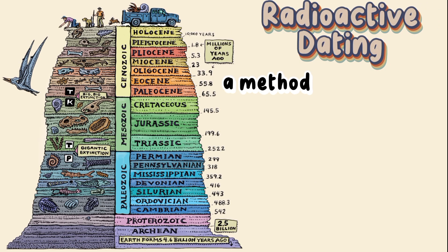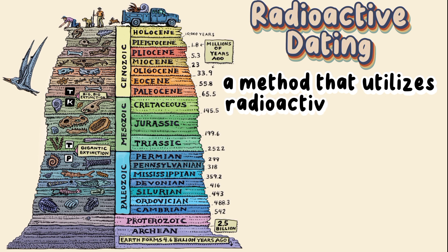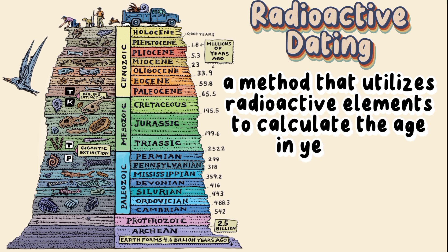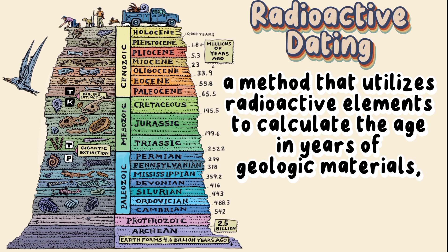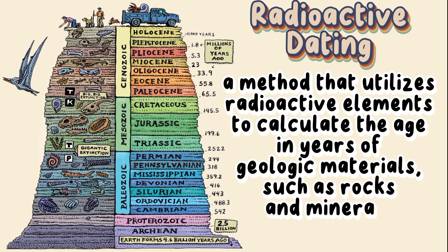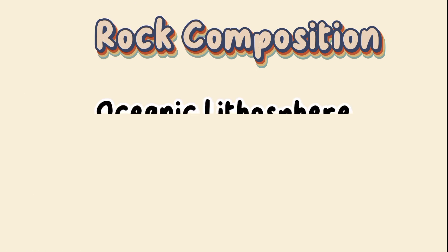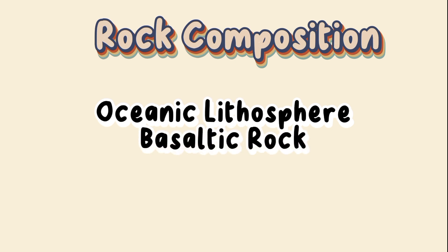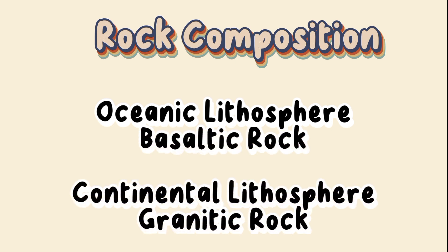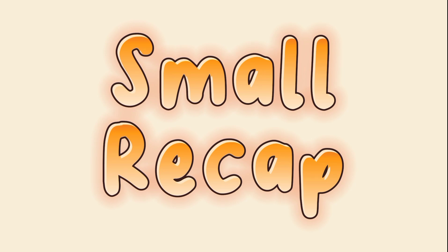Radioactive dating is a method that utilizes radioactive elements to calculate the age in years of geologic materials such as rocks and minerals. Number four: rock composition. Basaltic rocks make up the majority of the oceanic plates, whereas granitic rocks make up the majority of the continental plates.